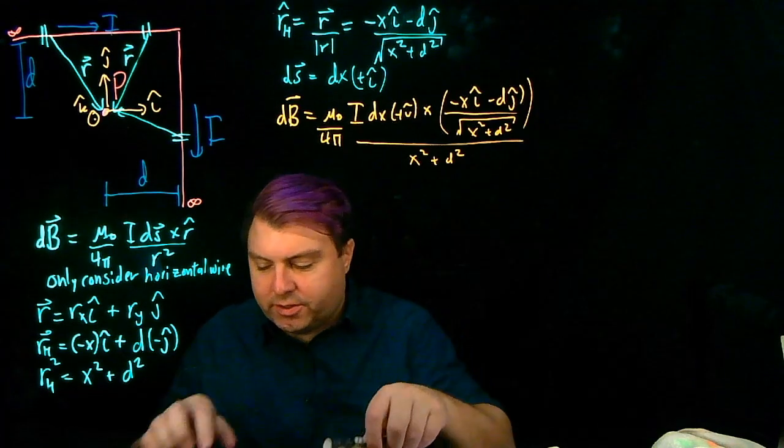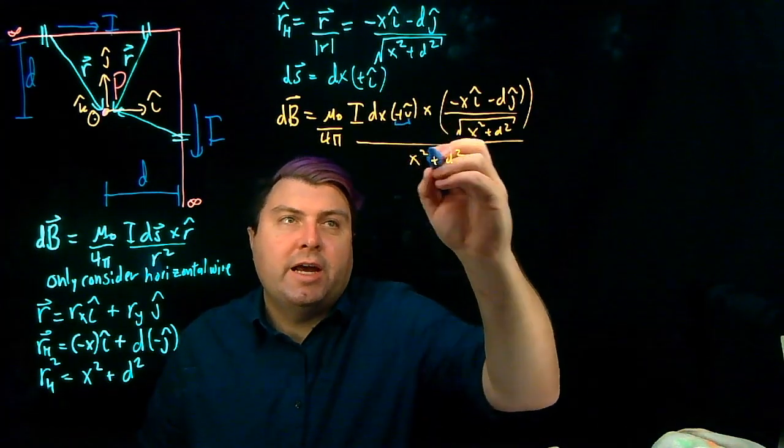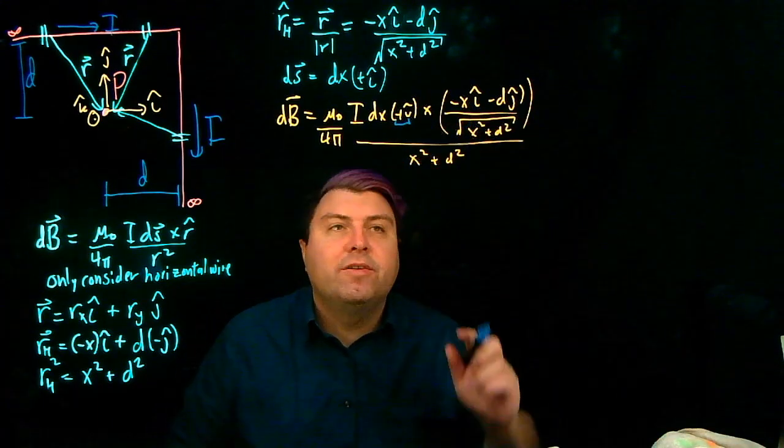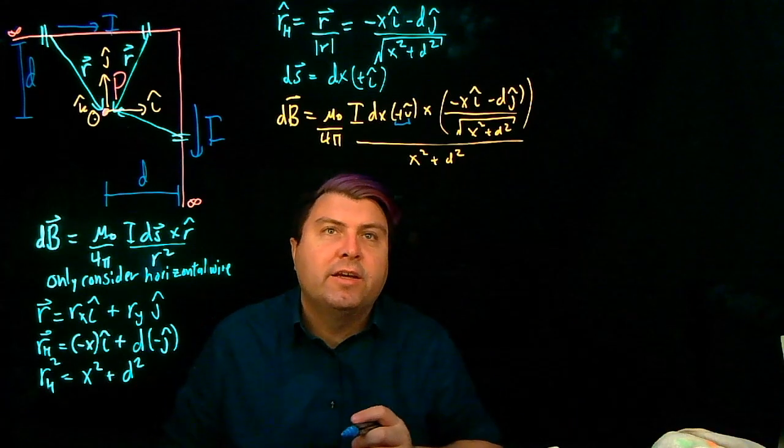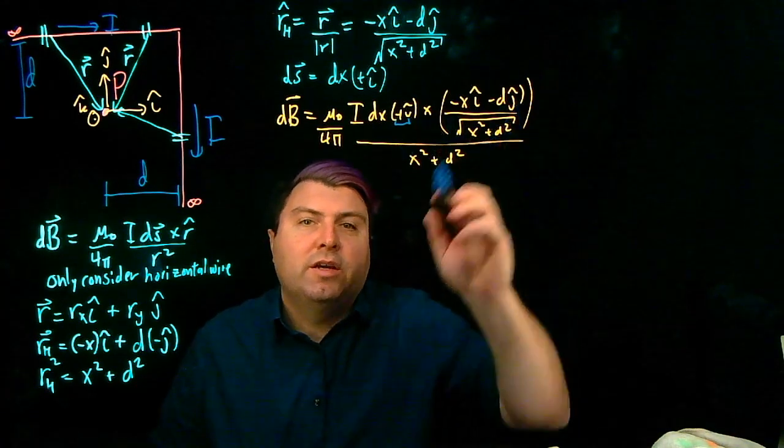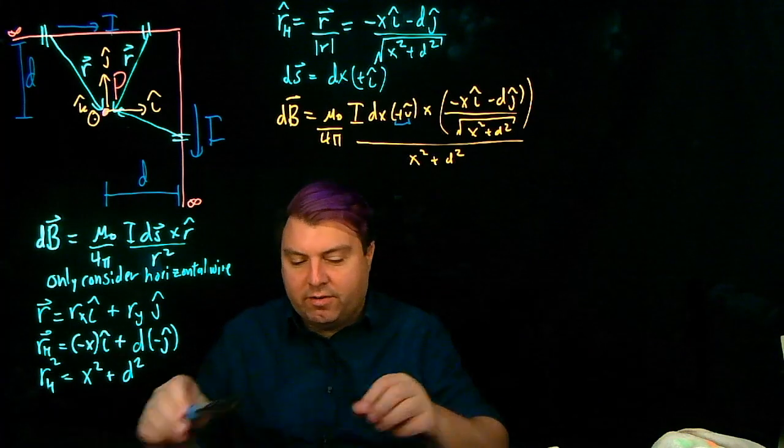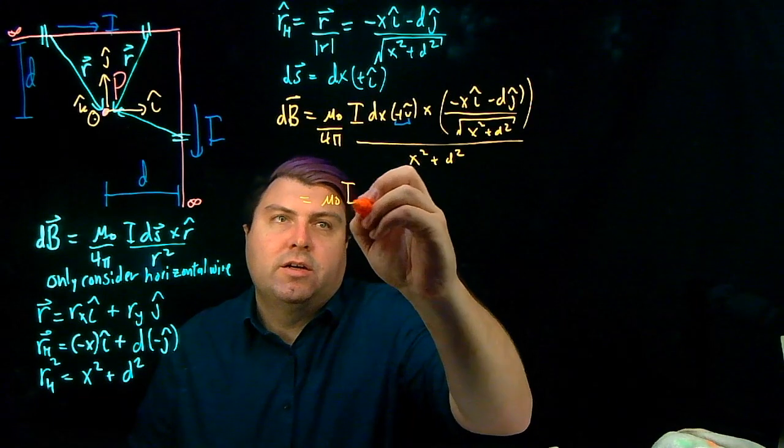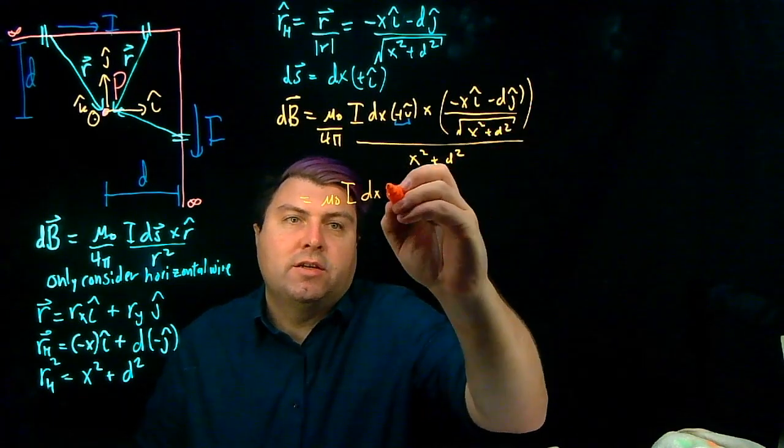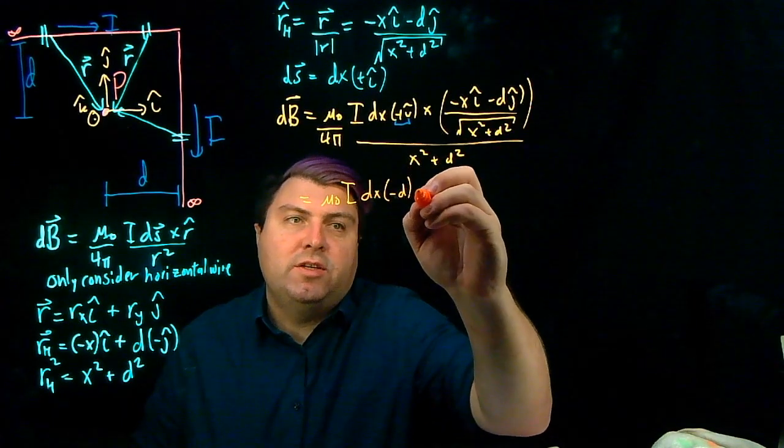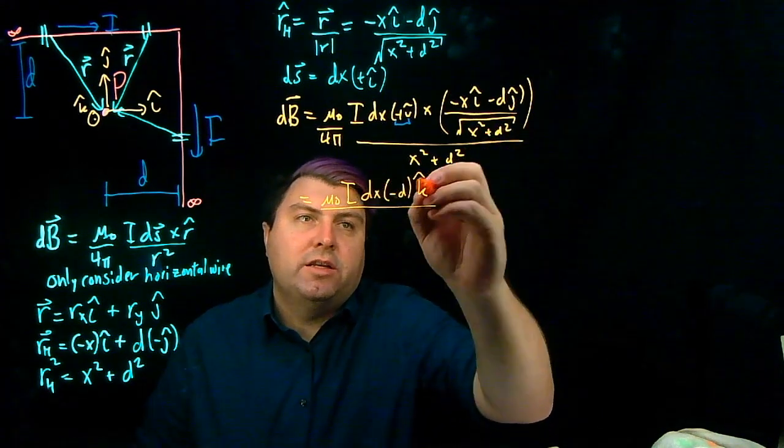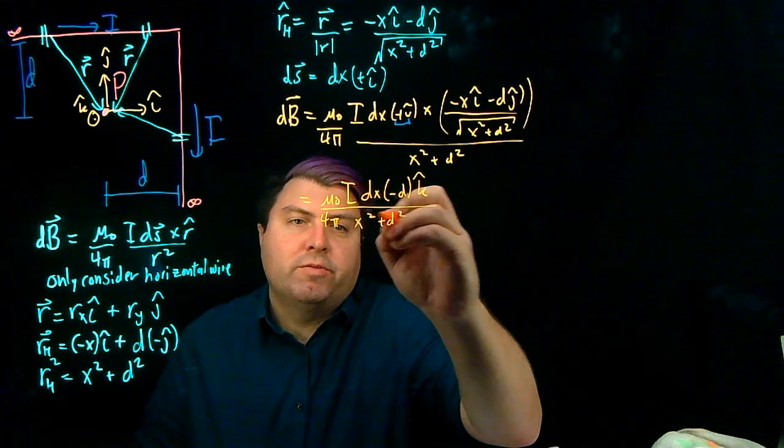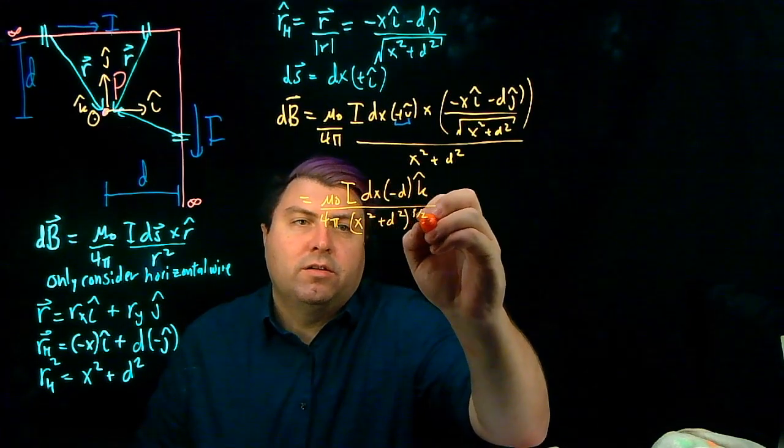So let's look at this cross product. Here I have plus i hat. So when I cross i hat with i hat, I get 0. Nicely enough. i hat crossed with j hat is going to be k hat. And we'll get this negative sign out of, or that comes along with us. So then I have mu naught i dx times negative d k hat. And then I can distribute these two together to be 4 pi x squared plus d squared to the 3/2.